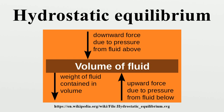Planetary geology: The concept of hydrostatic equilibrium has also become important in determining whether an astronomical object is a planet, dwarf planet, or small solar system body. According to the definition of planet adopted by the International Astronomical Union in 2006, planets and dwarf planets are objects that have sufficient gravity to overcome their own rigidity and assume hydrostatic equilibrium. Such a body will normally have the differentiated interior and geology of a world, though near-hydrostatic bodies such as the protoplanet 4 Vesta may also be differentiated.